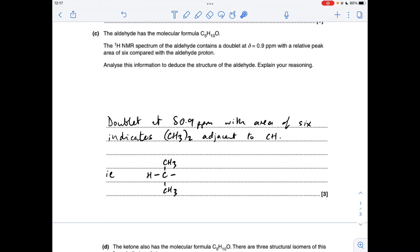Part C now. So this doublet at delta 0.9 ppm with the area of six indicates two equivalent methyl groups adjacent to a single hydrogen on a carbon. So we've got this structural feature in the aldehyde. If we just look at how many atoms we've got left, we've used three carbons,